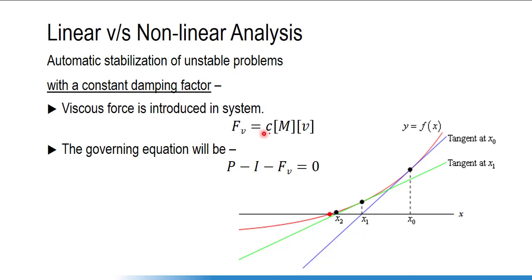If we do not get convergence, the software is able to change the viscous force value and converge the solution within the defined parameters. We have to decide — up to five percent or ten percent — how much viscous force we allow with respect to the internal strain energy. So the artificial damping factor helps stabilize the problem.